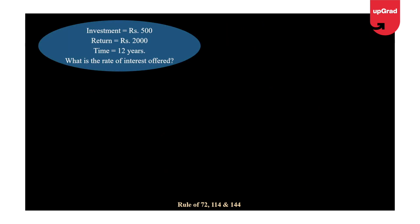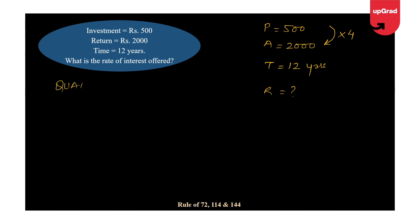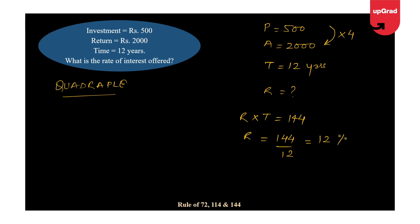Let's take one more. This time I won't even use the conventional method. Principal = 500 rupees, Amount = 2000 rupees, Time = 12 years. I just need to check what is happening — 500 has become 2000, which is 4 times, so it has gone quadruple. Therefore Rate × Time = 144, and Rate = 144 ÷ 12 = 12%. That's the answer — so simple!